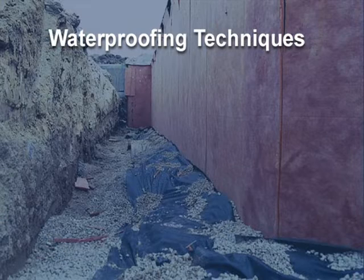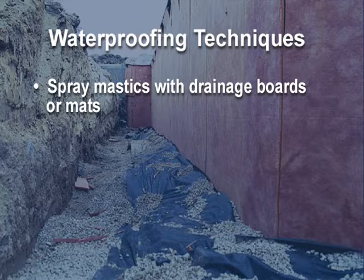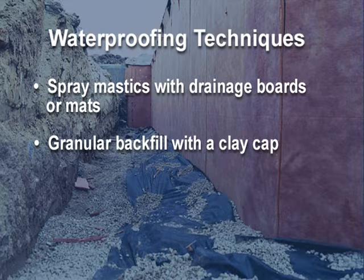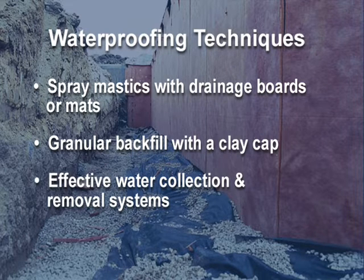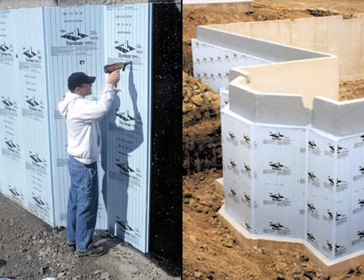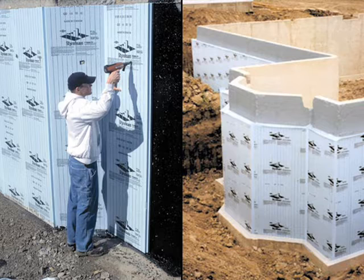As with any foundation, it is essential to use waterproofing techniques like spray mastics with drainage boards or mats, granular backfill with a clay cap, and effective water collection and removal systems. In most climates, poured wall foundations need to be insulated. Rigid insulation or insulating drainage boards are recommended to be installed on the exterior of all foundation walls.